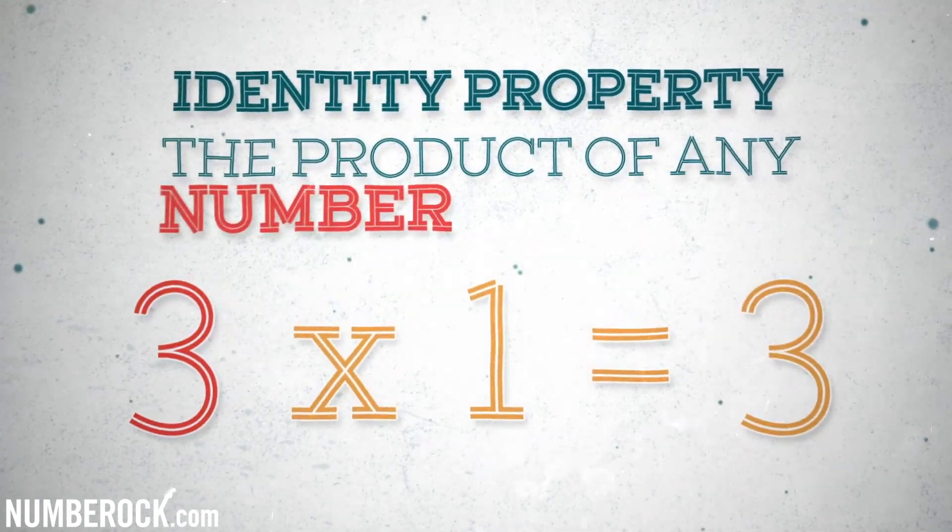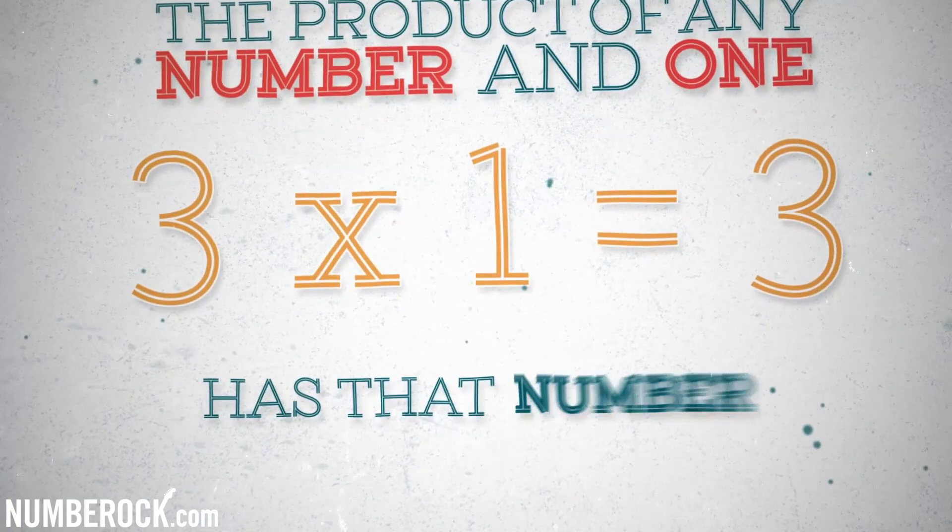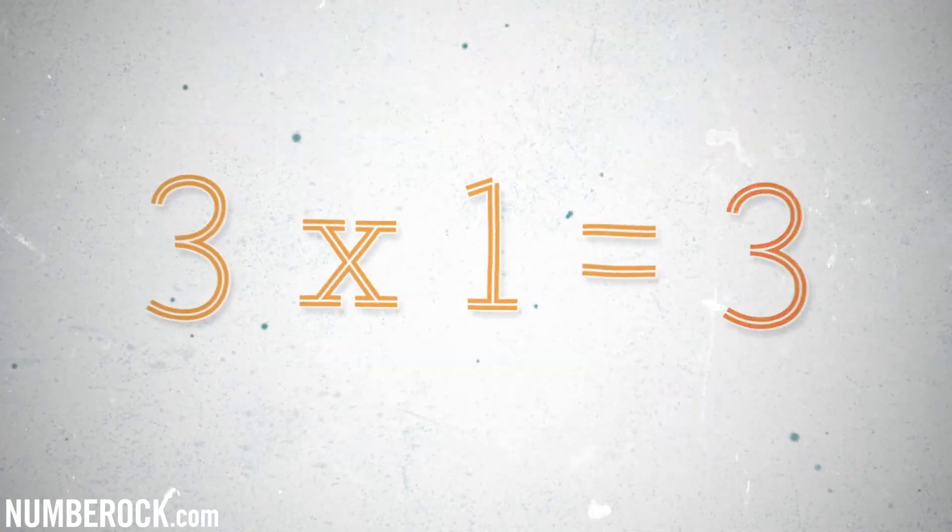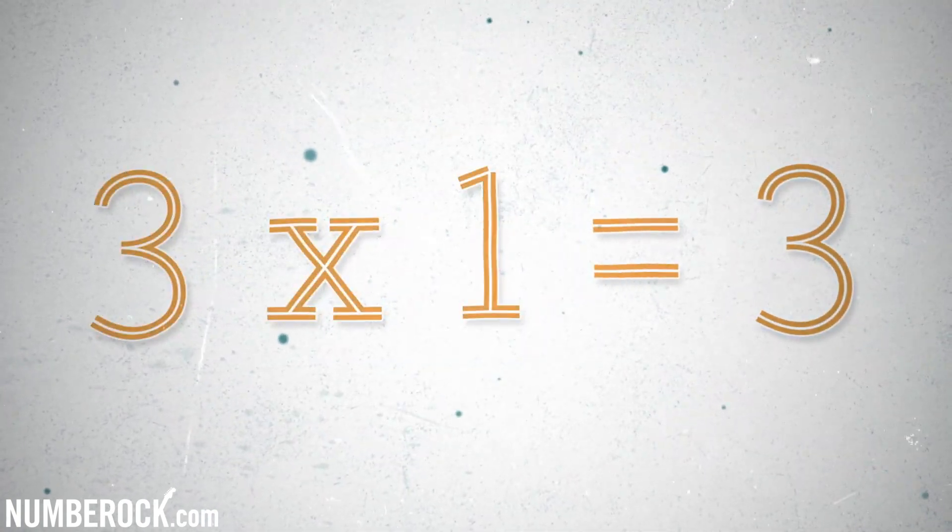The product of any number and one has that number as the solution. For example, three times one equals three. That's called the identity property.